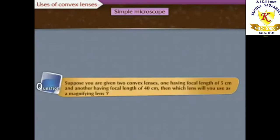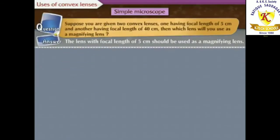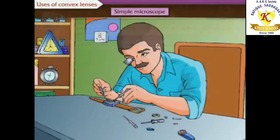Suppose you are given two convex lenses, one having the focal length of 5 cm and another having a focal length of 40 cm. Which lens will you use as a magnifying lens? Think about it. Yes, the lens with focal length of 5 cm should be used as a magnifying lens.